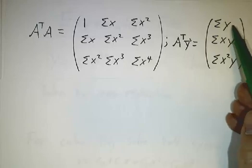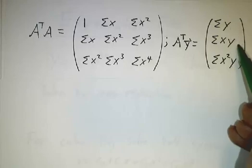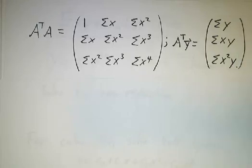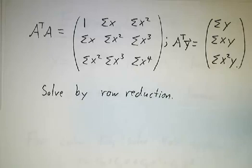A transpose y involves the sum of the y's, sum of the xy's, and sum of the x squared y's. Again, you get a 3x3 system — solve it by row reduction.